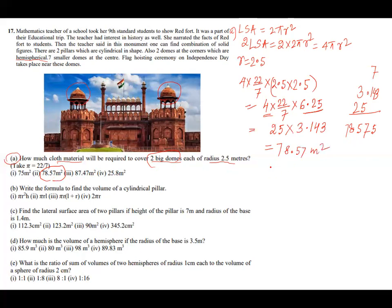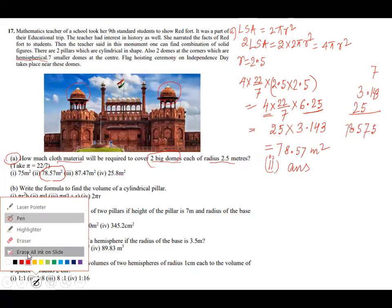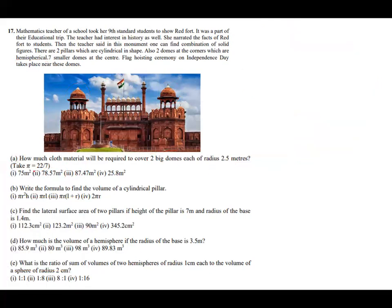So where is the answer? 78.57. So this is the answer. 78.57 meters square. So option 2 is the answer. So part a answer is 78 point this. Now I will come to question b.